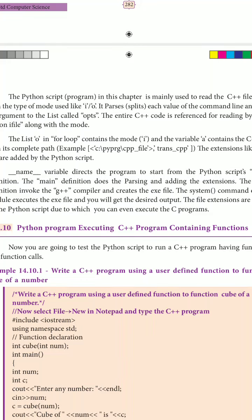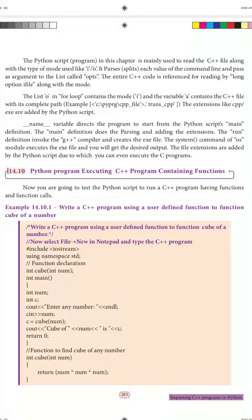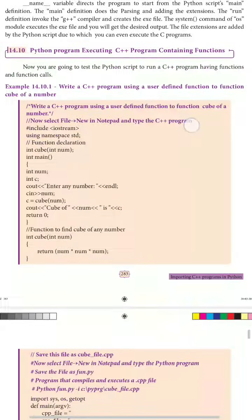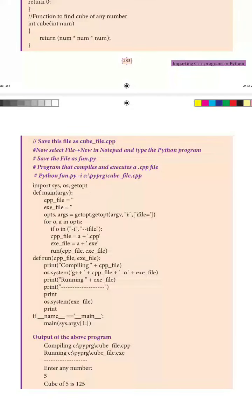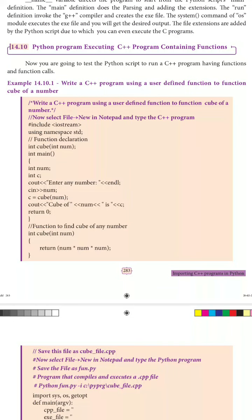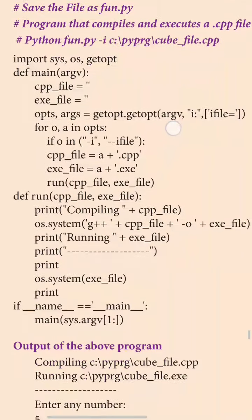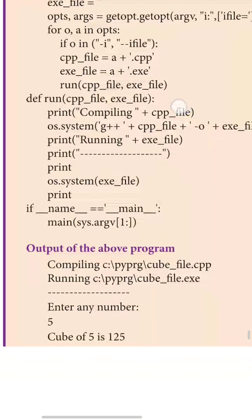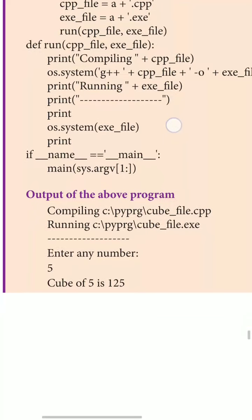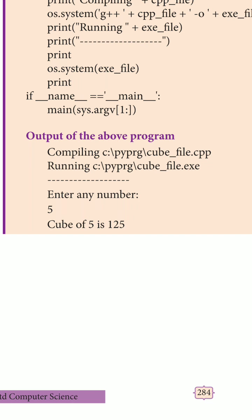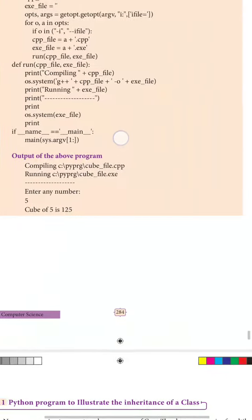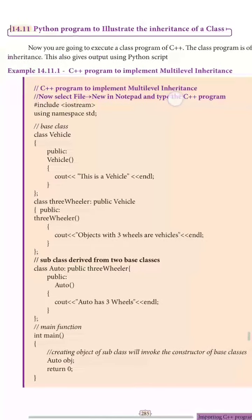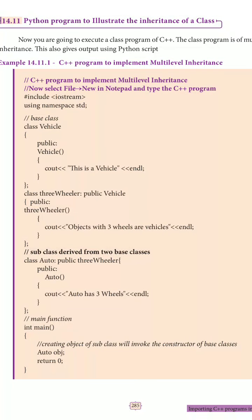Next is Python program executing a C++ program containing functions. Here also it will be the same — the entire C++ program is converted into arguments and you can find this argument is parsed by using the for loop. The for loop value containing 'o' will be executed using os.system on the executable file, and it is initiated by using the last statement, so you can get the output. You can see the same example with inheritance, where inheritance means getting the property of a superclass into the base class.